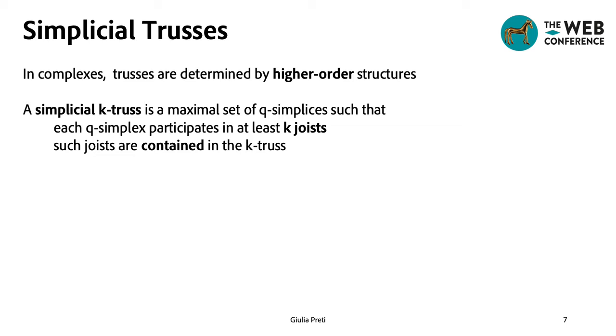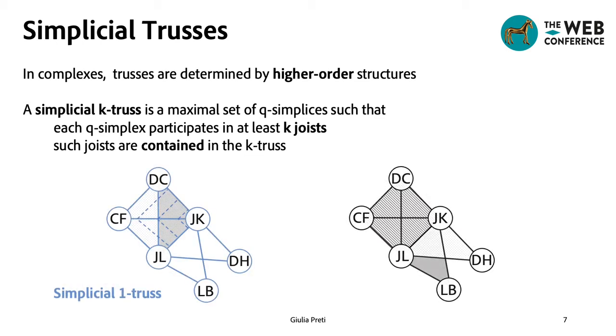We can extend the notion of trusses to the realm of complexes by considering higher-order structures in place of triangles. So a K-truss in a simplicial complex becomes a set of simplices that form at least K-joists with other simplices in the truss.